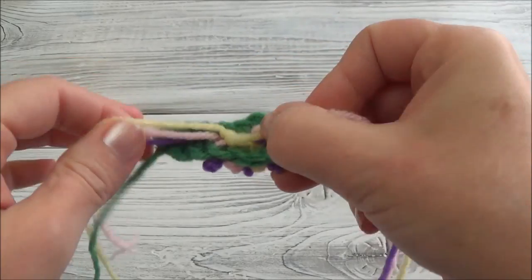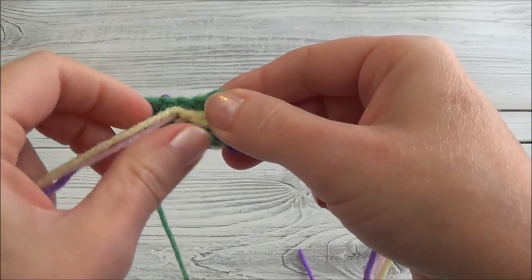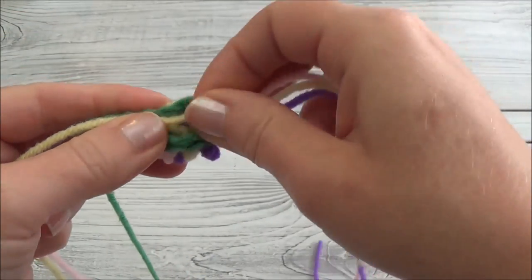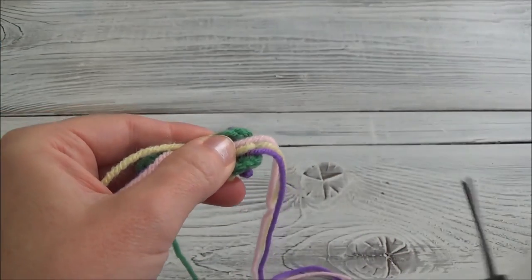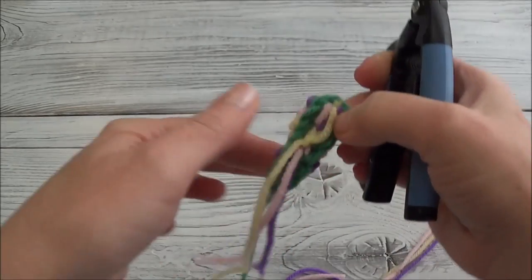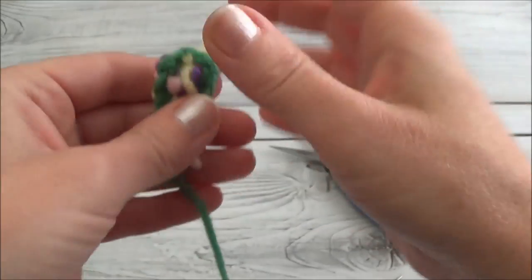Now we're going to take these yarn tails and spread them out so one half should go one direction and the other half should go the other. That just reduces the bulk in the middle. Now we're going to trim them up so they're not longer than the green part.